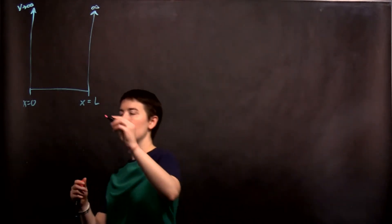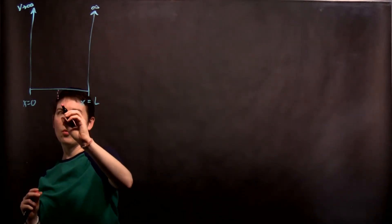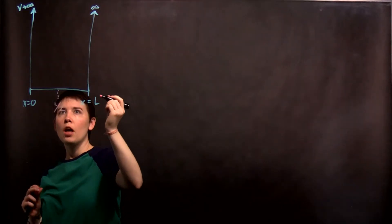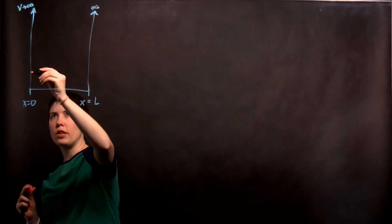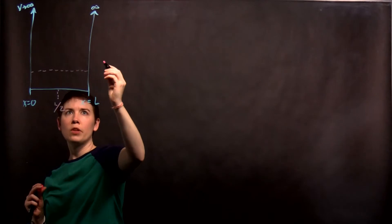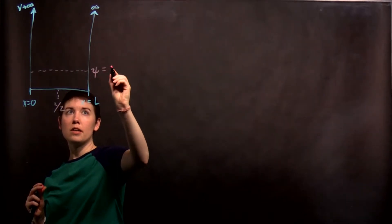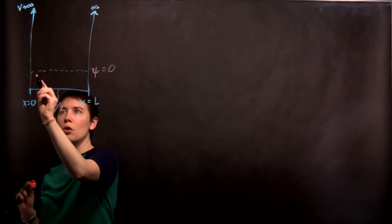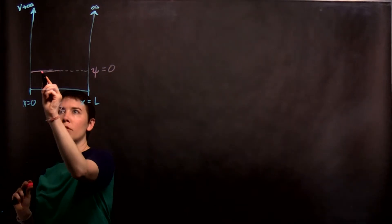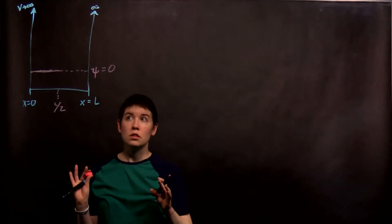We'll say then that we have a point which is L over two. And so what I'm going to say is, okay, let me have this dashed line that will be psi equals zero. Okay? For the left half, our wave function is zero.